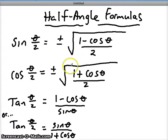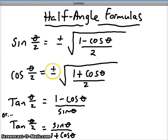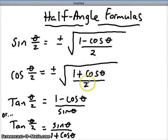We're going to do something similar for the half-angle cosine formula. Again, it's going to be positive or negative depending on what quadrant the angle is in. Cosine is positive in the first and fourth quadrant, so anything in the second or third quadrant is going to have that negative symbol. Again, we're taking the square root of this entire ratio: 1 plus the cosine divided by 2.